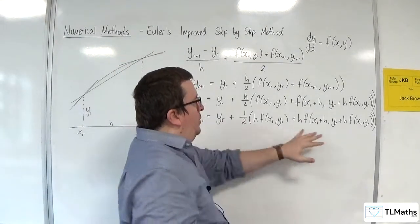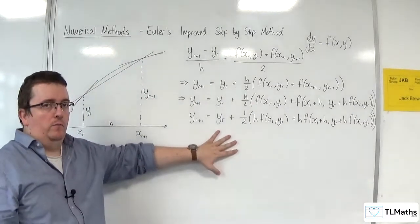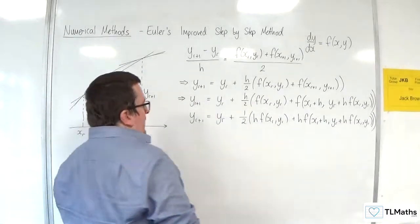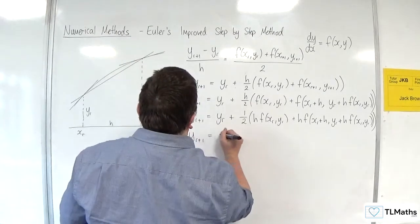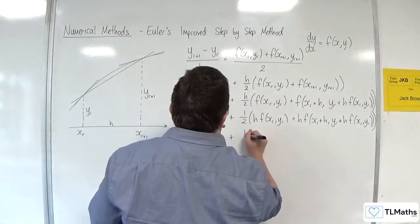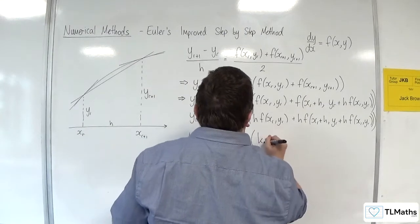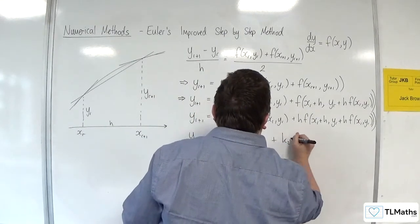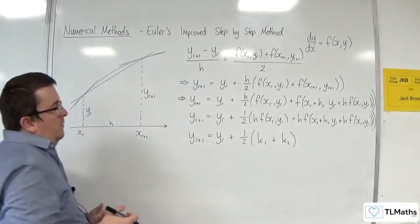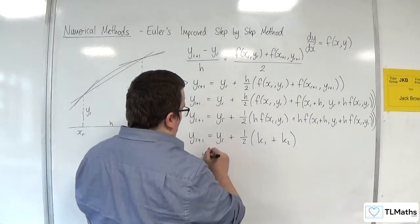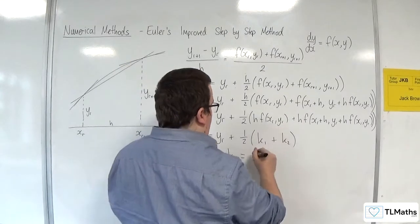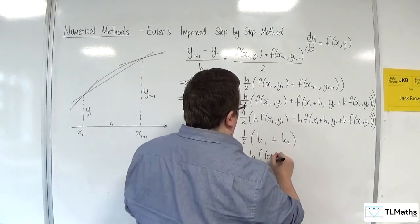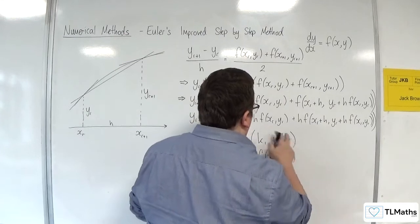Now, because the formula is very messy, we abbreviate it by writing YR plus 1 is equal to YR plus 1 half of K1 plus K2. Now, the K1, so where K1 is equal to the H, F of XR, YR, so that bit there.